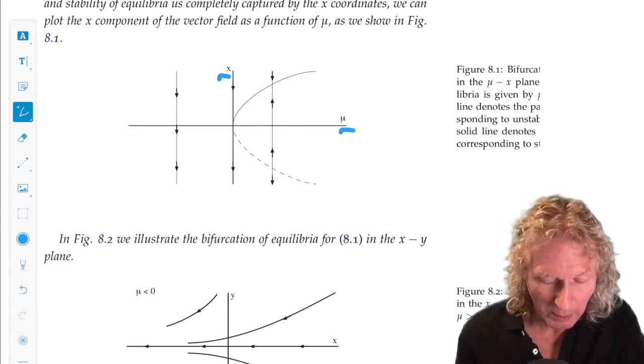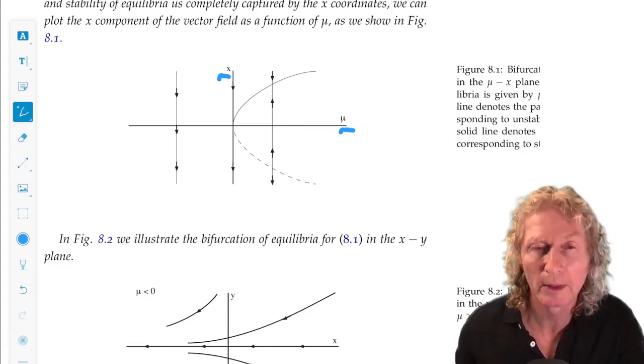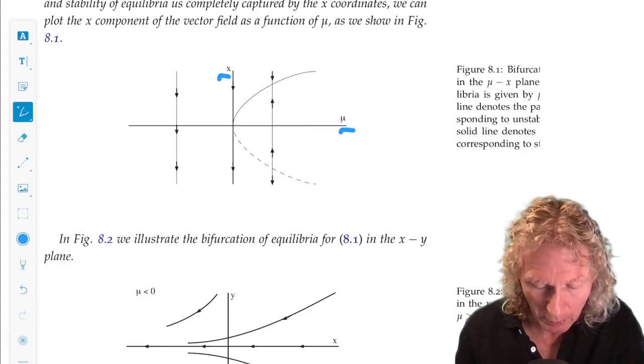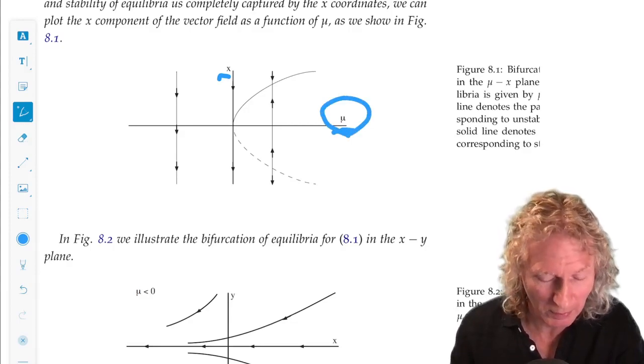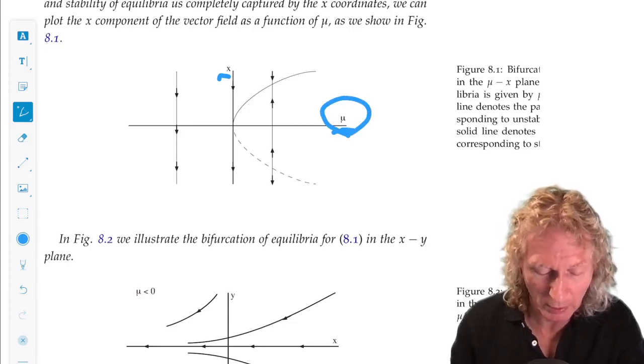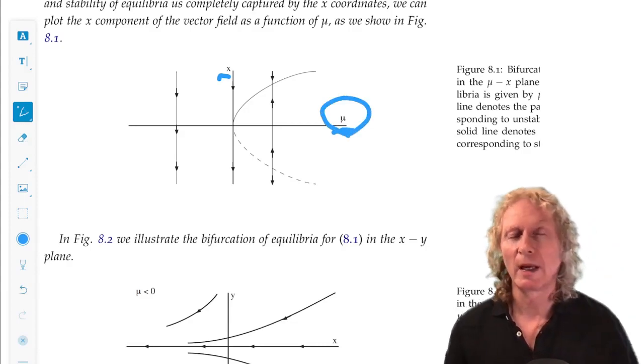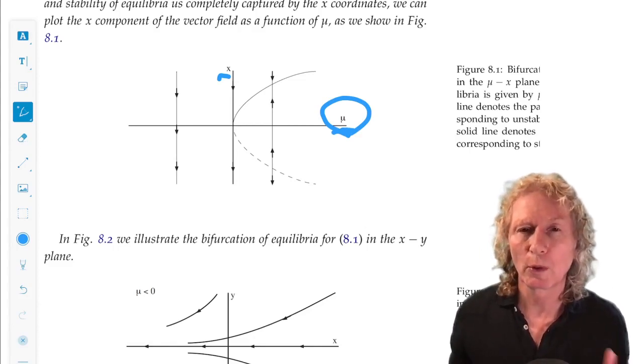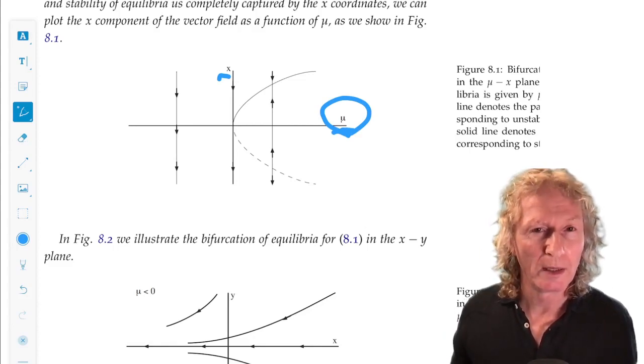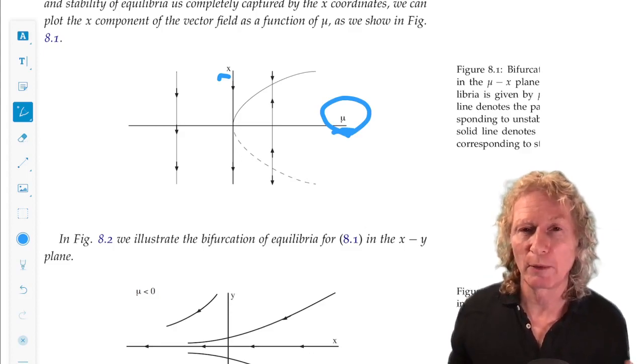So we plot horizontally the bifurcation parameter mu, or the parameter mu. Calling it a bifurcation parameter is a bit preliminary. And the vertical axis is the single coordinate of the phase space which captures the bifurcation.